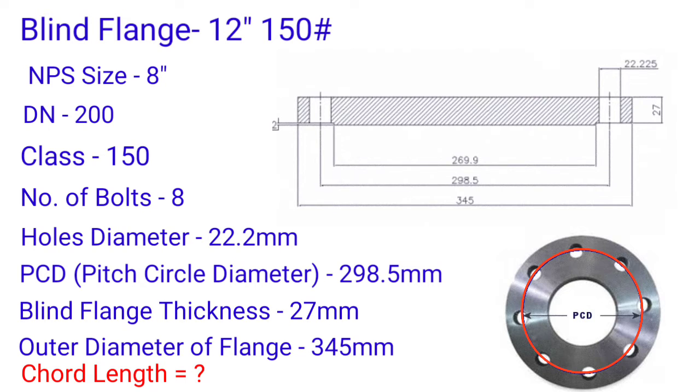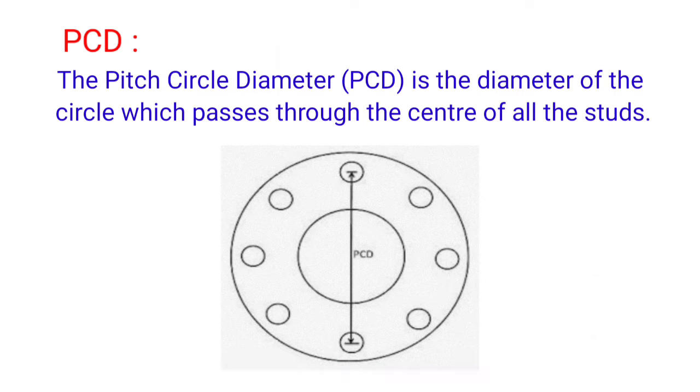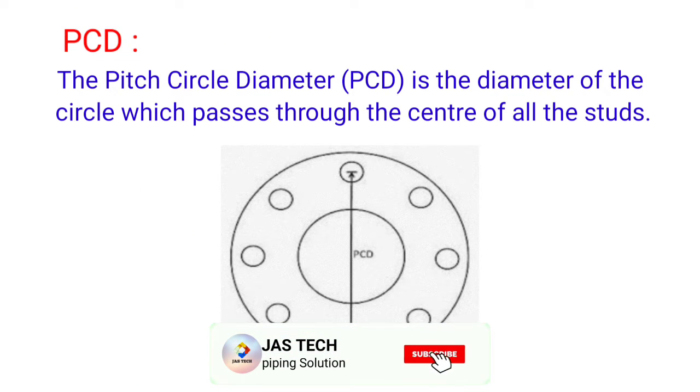We want to find out chord length, hole to hole chord length. PCD - the pitch circle diameter is the diameter of the circle which passes through the center of all the studs.